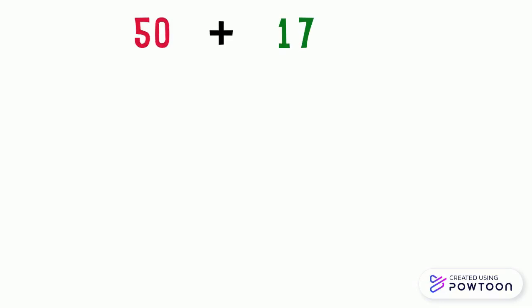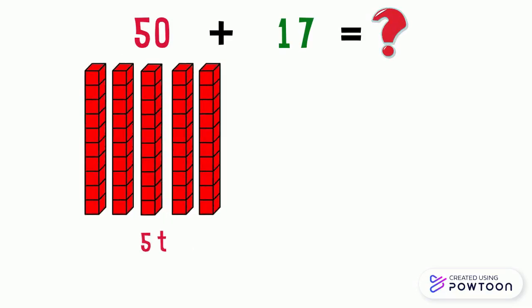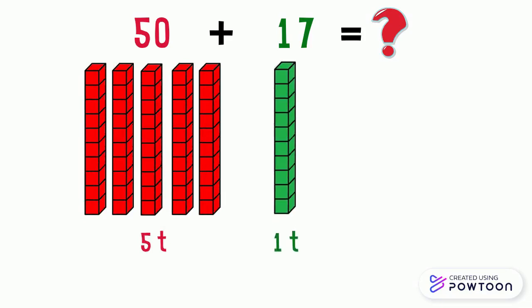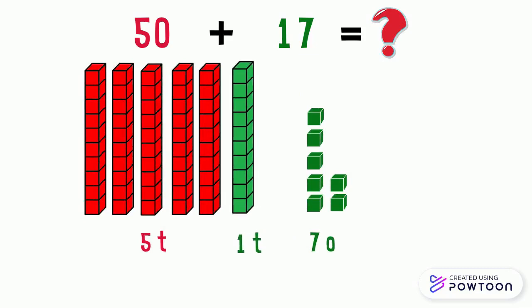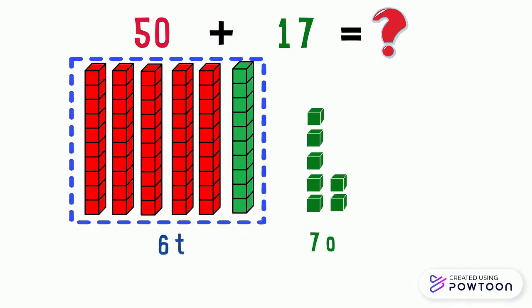Now, we want to add 50 and 17. In the number 50, there are 5 tens. And in the number 17, there are 1 ten and 7 ones. If we put the tens all together and add them, we will get 6 tens. And the ones digit doesn't change. So, 50 plus 17 equals 67.